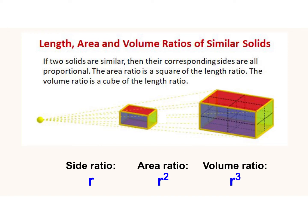In this lesson, we are going to look at the length, area, and volume ratios of similar solids. This property states that if two solids are similar, then their corresponding sides are all proportional. The area ratio is the square of the length ratio, and the volume ratio is a cube of the length ratio.